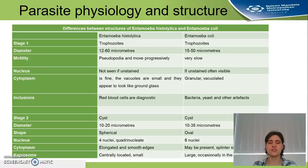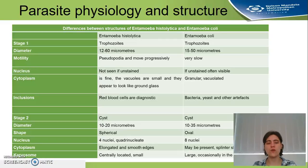The second stage is the cyst. The Entamoeba histolytica cyst is 10 to 20 micrometers, spherical in shape, has four nuclei, and the chromatoid body is elongated with smooth edges. The cyst of Entamoeba coli is 10 to 35 micrometers, ovoid in shape, and has eight nuclei, which is diagnostic of this parasite. The chromatoid body may or may not be present, and if present, it has a splintered shape.